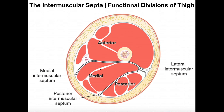We can see the division down here. This is the medial part, or medial muscles — these tend to be hip adductors. Then back here, the posterior muscles, these are going to be knee flexors and hip extensors, and these, of course, are the hamstrings.